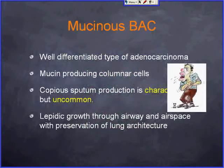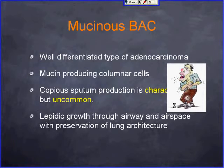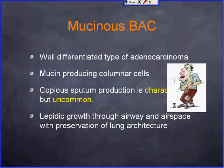In the neoplastic category, BAC — bronchioloalveolar carcinoma — is a differential for chronic airspace disease. It can be subcategorized into mucinous and non-mucinous types. The mucinous type consists of columnar cells producing copious mucin, giving a ground glass appearance. The characteristic clinical presentation of copious sputum production is uncommon. They tend to have a lepidic flow through airways with preservation of underlying pulmonary architecture.